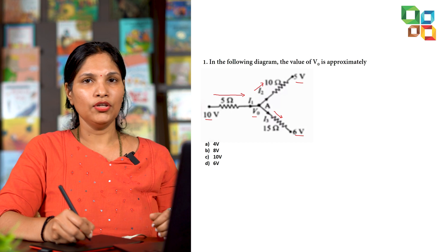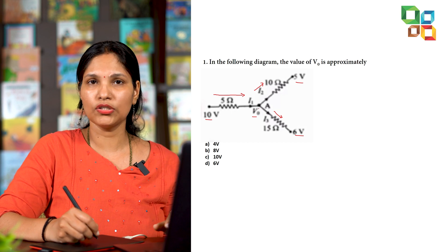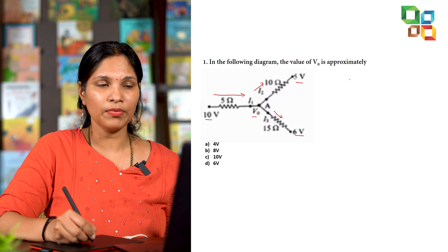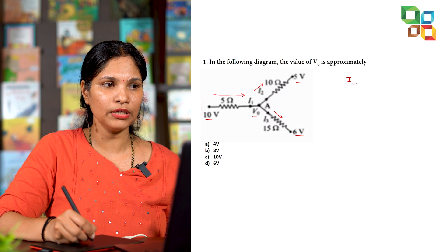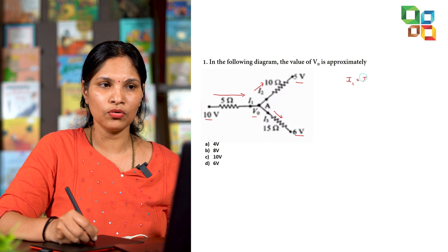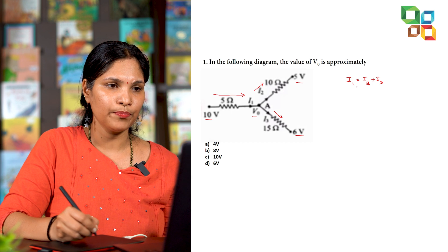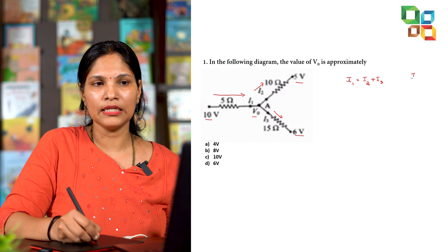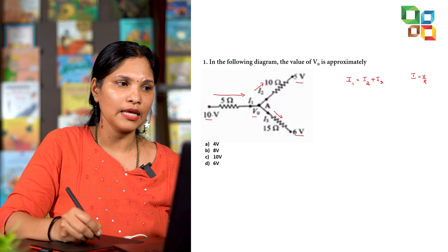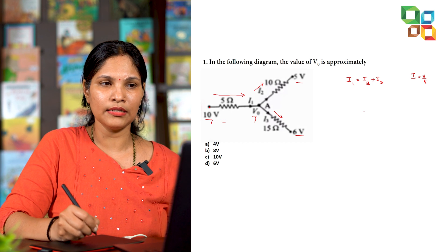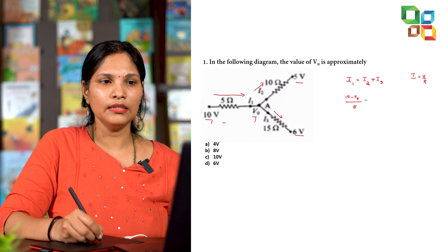Remember that current always flows from higher potential to lower potential. From KCL, current entering a node should be equal to current leaving the node. Current entering the node is I1 and current leaving is I2 and I3, so I1 = I2 + I3. From Ohm's law, I = V/R, so the potential difference across the first branch is (10 - V-naught) divided by 5 ohms.